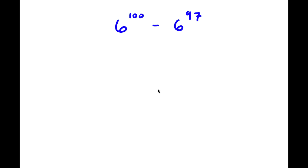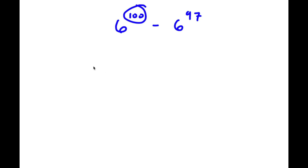In this problem, I have 6 to the power of 100 minus 6 to the power of 97. The first thing I'm going to do is rewrite 100 as 97 plus 3. So now I have 6 to the power of 97 plus 3 minus 6 to the power of 97.